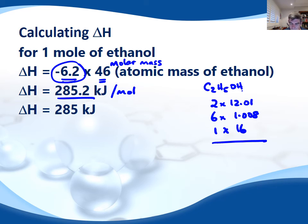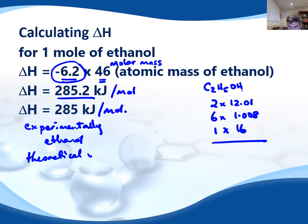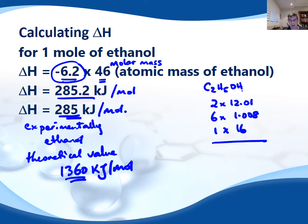So the molar heat of combustion experimentally for ethanol is 285 kilojoules per mole. The problem with this is that the theoretical value — which you might remember — is around 1360 kilojoules per mole. So we are considerably lower than that.